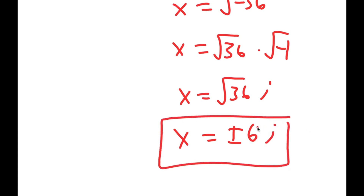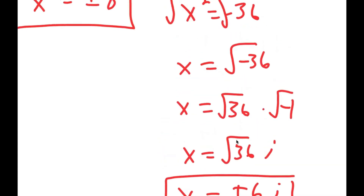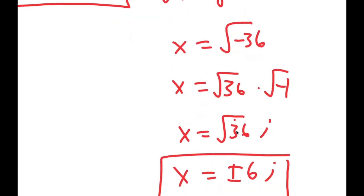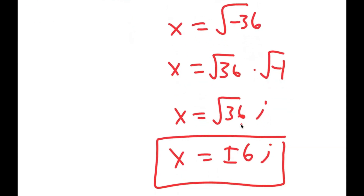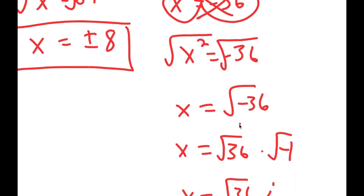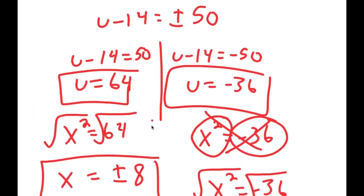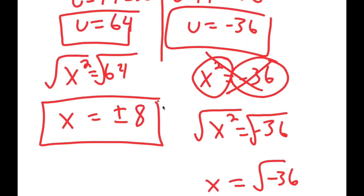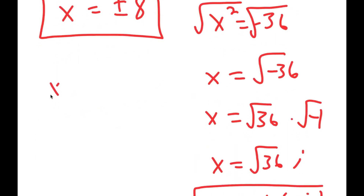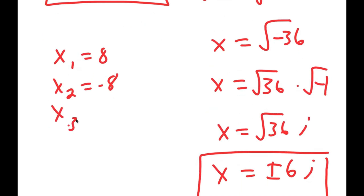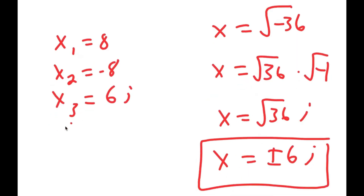These are two imaginary solutions, which still count as solutions to this problem. So my four solutions are x equals 8, x equals negative 8, x equals 6i, and x equals negative 6i.